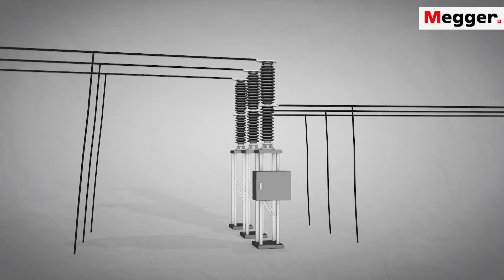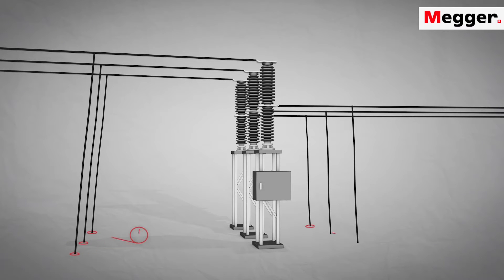According to international safety standards, a circuit breaker should be grounded on both sides while work is performed.